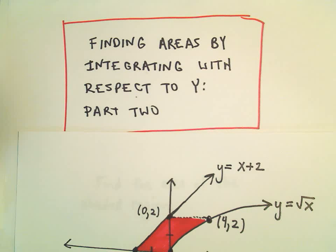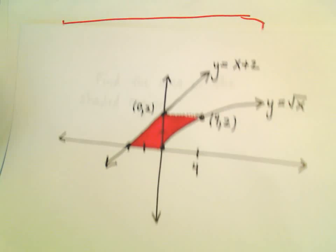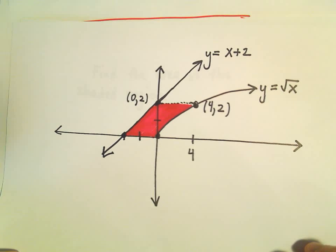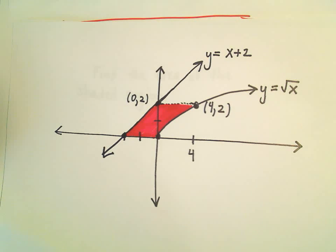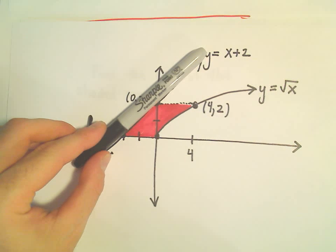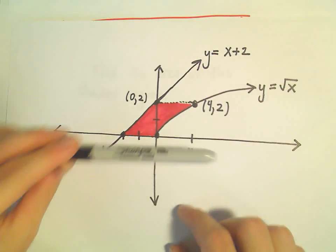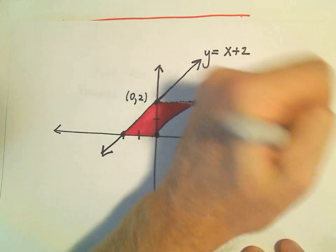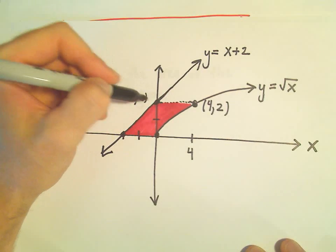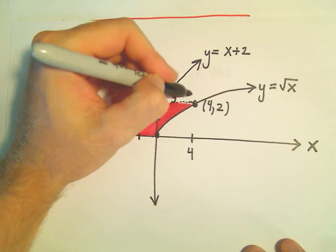Okay, here we're going to look at another example of integrating with respect to y. So here we're going to find the area of the shaded region. It's bounded by y equals x plus 2, y equals square root of x, and then bounded below by the x-axis, so y equals 0, and then it looks like this line y equals 2.